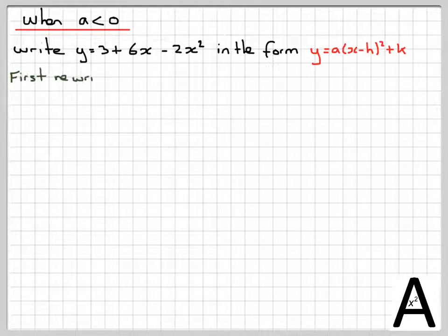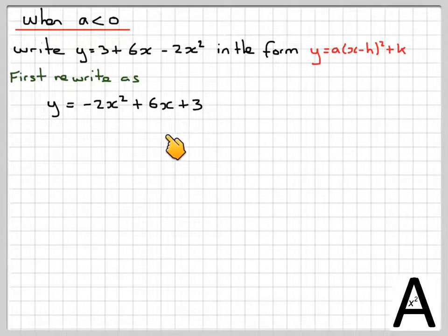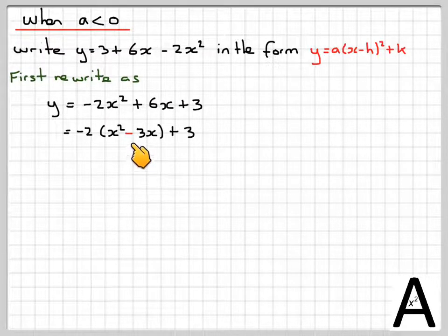So going back to the first method again, if we first rewrite it as y equals minus 2x squared plus 6x plus 3, when we factorize out the minus 2, which we do here, the sign will change.